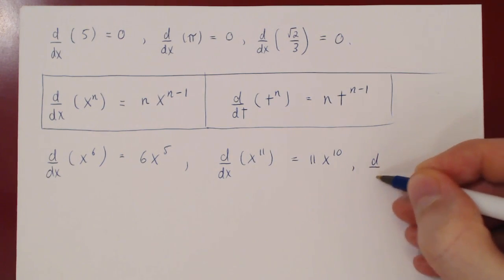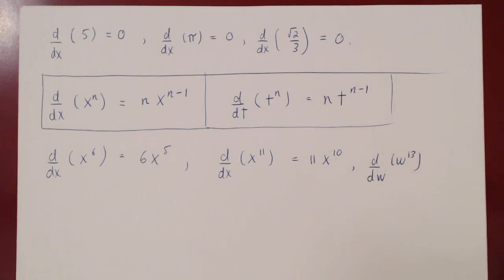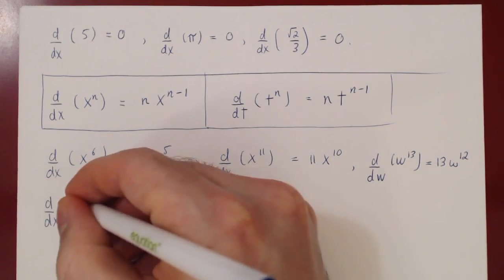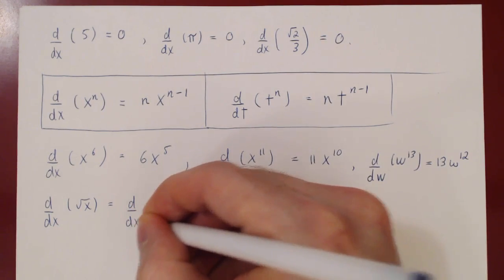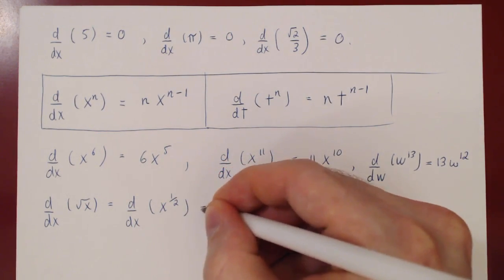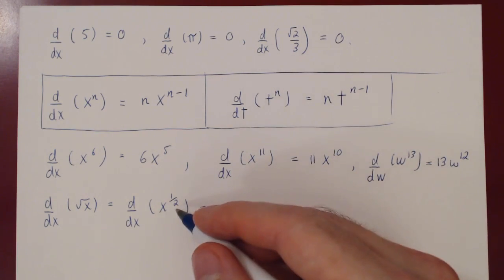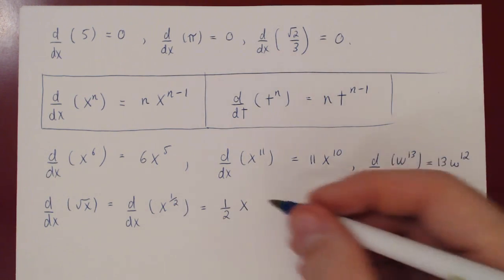What's the derivative with respect to w of w to the 13? We differentiate w to the 13 with respect to w — the power rule says bring the exponent down: 13 times w to the 13 minus 1, which is 12. What about the square root of x? If we ask what's the derivative of root of x, all we have to do is rewrite root of x as an exponent: x to the 1/2. Now we can apply the power rule — bring the power down: 1/2 times x to the 1/2 minus 1, that's negative 1/2.